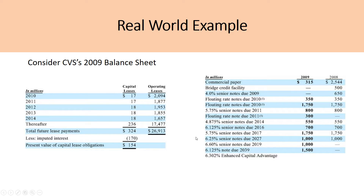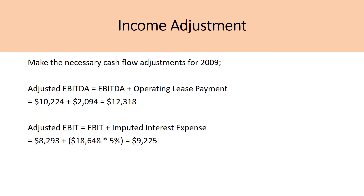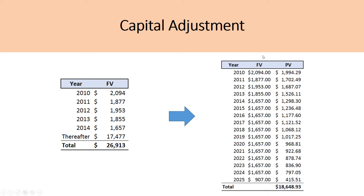The cost of debt assumption depends on the company. A company without a strong creditor relationship might have a cost of debt at 8% or 9%, or it might be lower. In this case we assume 5%, based on the outstanding bonds and subordinated debt the company is obligated to pay. We take the operating lease numbers — including the thereafter figure of $17,477 — split that up, and assume $1,657 being paid annually from 2015 onwards. We then discount those payments using the 5% discount rate to get each year's present value, sum them up, and arrive at a present value of operating leases of $18,648 million. That is the capital adjustment for the company.